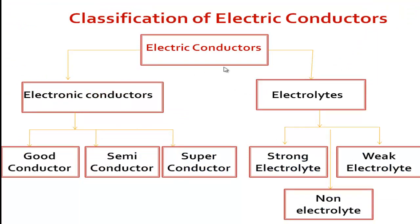Electric conductors are mainly of two types: electronic conductors and electrolytes. This classification is done on the basis of the medium of conduction of electricity. Electronic conductors are again of three types: good conductors, semiconductors, and superconductors. Electrolytes are of three types: strong electrolytes, weak electrolytes, and non-electrolytes.